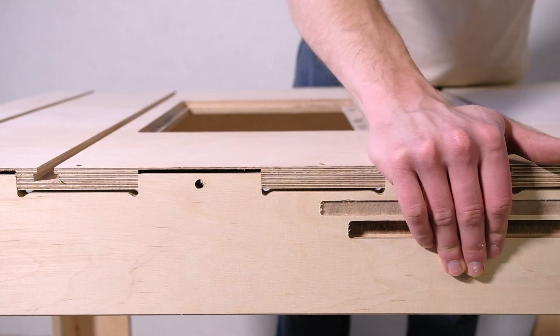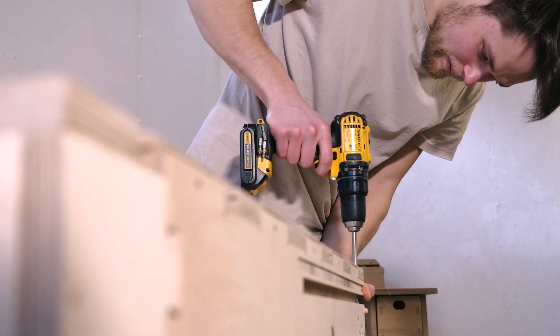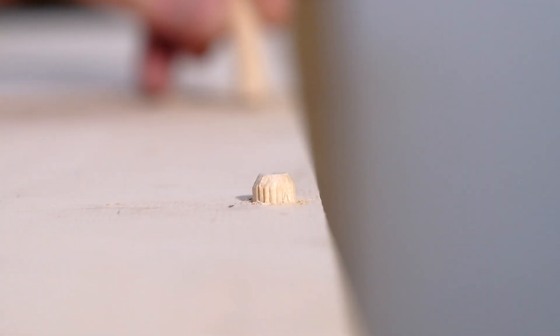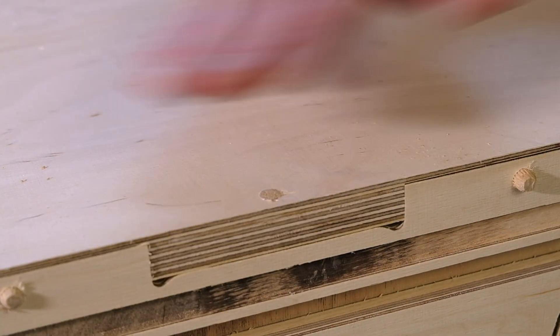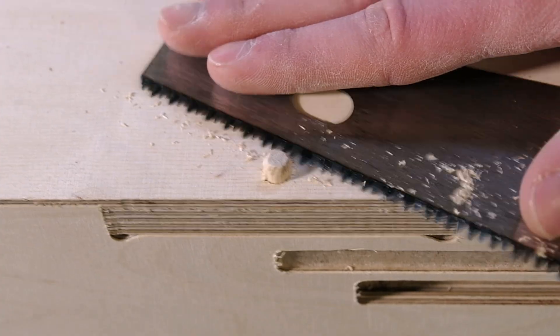I installed the table top. Some dowels were sticking out a little bit. I used a hand saw to remove them and a chisel to smoothen whatever was left of the dowels after the cut.